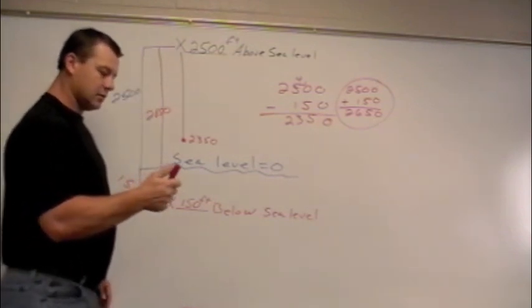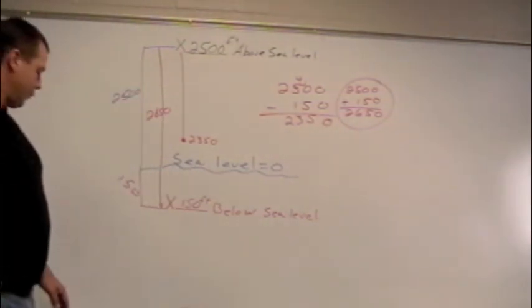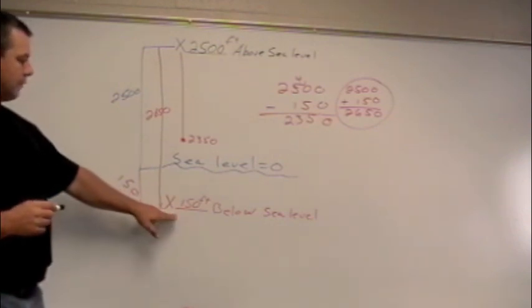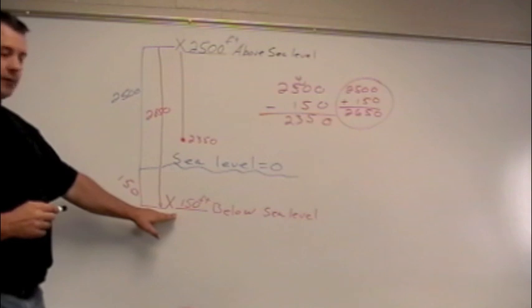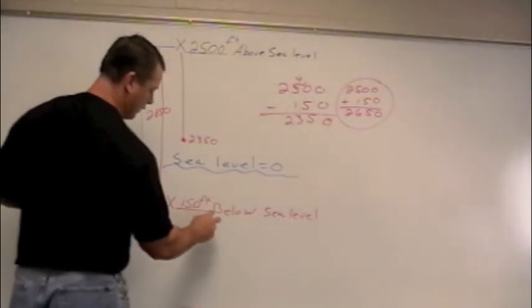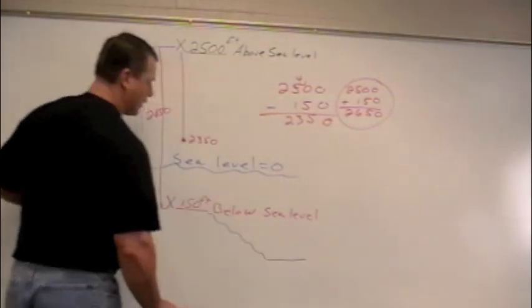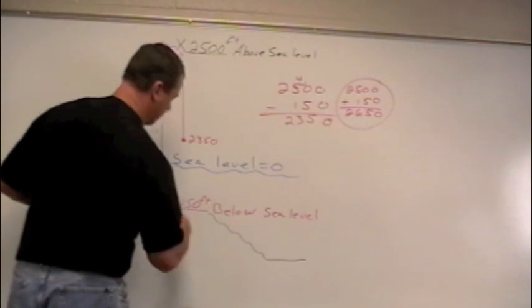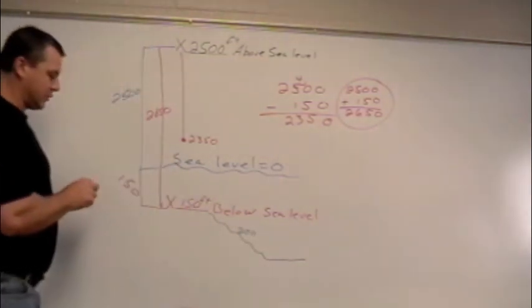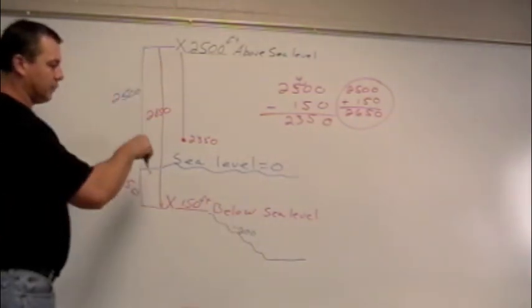All right. The second problem we want to look at is if we descended from the 150 feet below sea level. If we descended, that means if we went down, let's say, another 50 feet or say 200 feet. If we descended another 200 feet, which would be a negative 200, since we're going down below sea level.